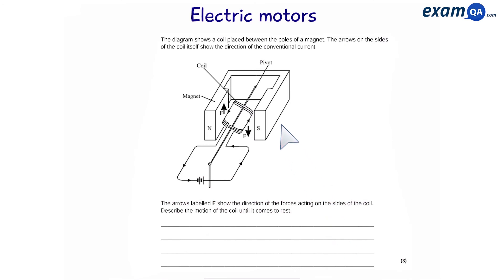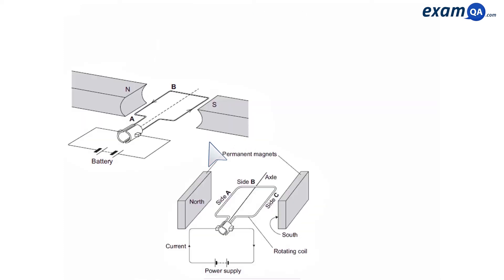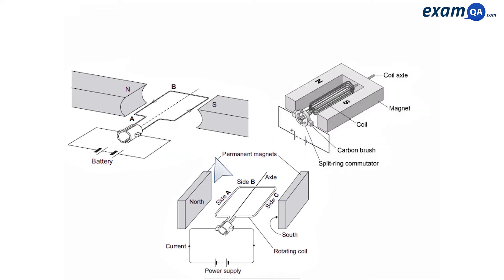Next question. Here we have a coil inside a magnet experiencing a current. The arrows labelled F show the direction of the forces acting on the sides of the coil. Describe the motion of the coil until it comes to rest. Now notice something's missing here. If we look at all the electric motors we've seen so far, they all have one thing in common that was missing in the previous one. And that is, they all have the following - a split ring commutator.